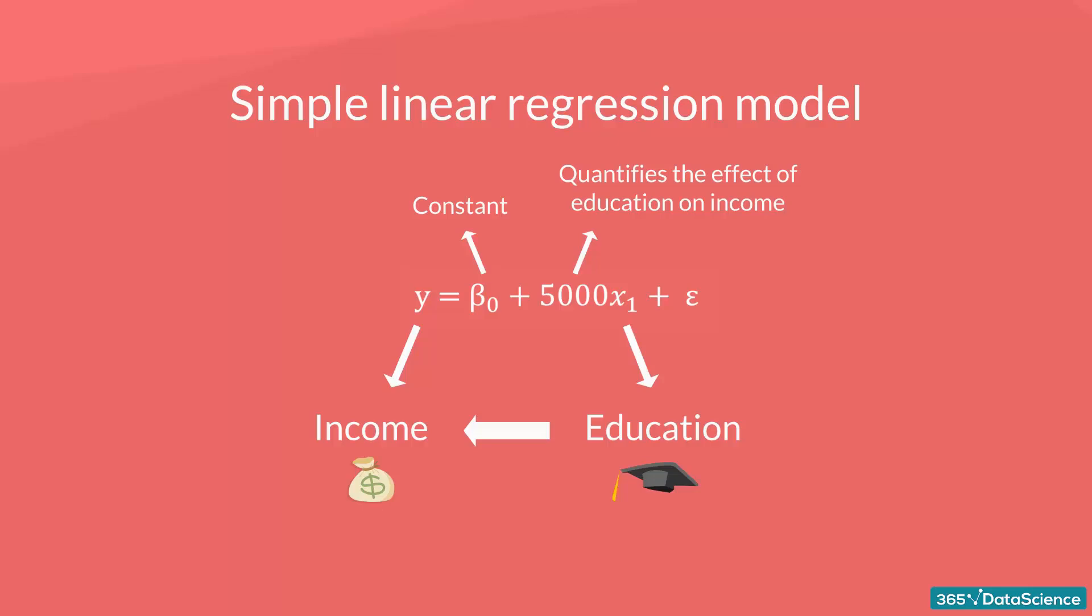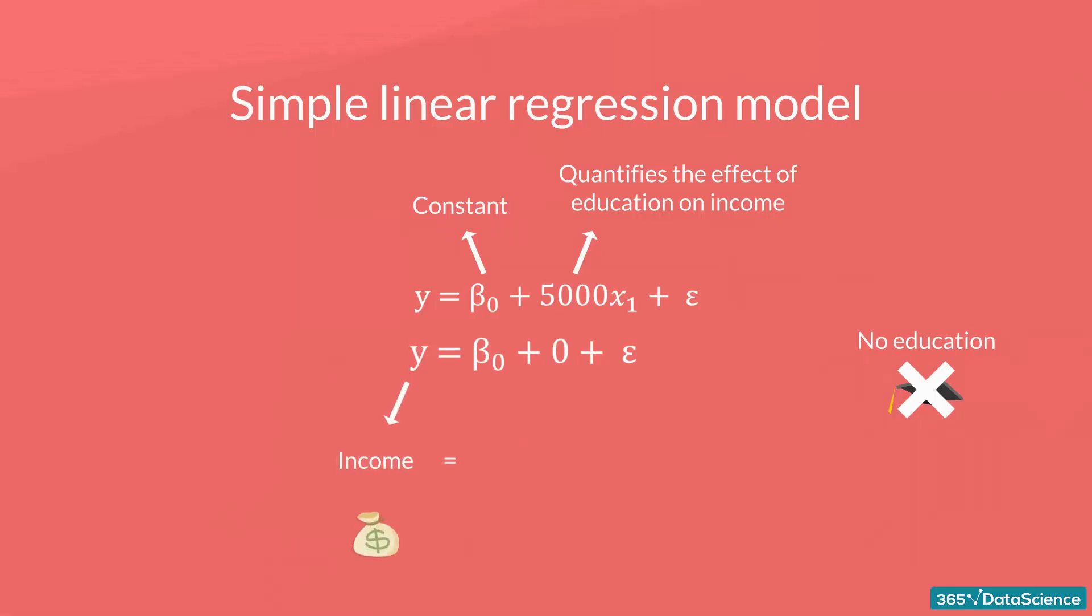So, if you never went to school and plug in an education value of 0 years in the formula, the regression will predict that your income will be the minimum wage. Makes sense, right?